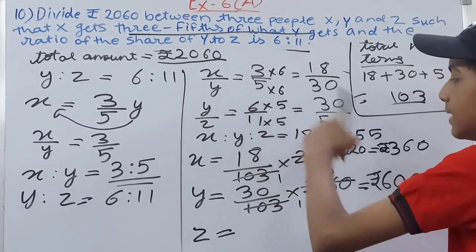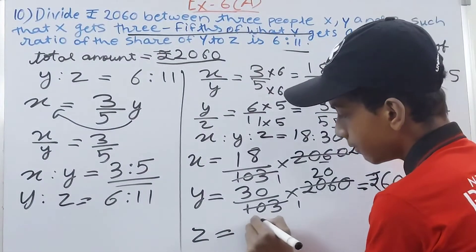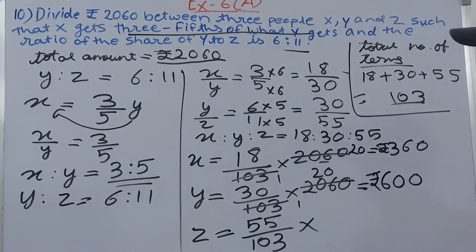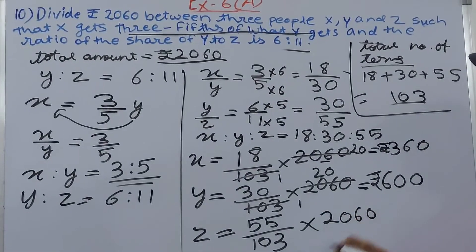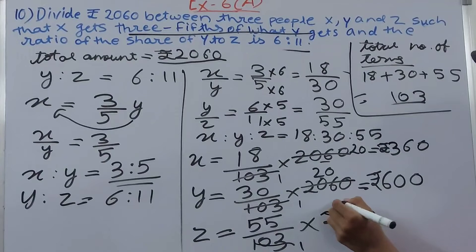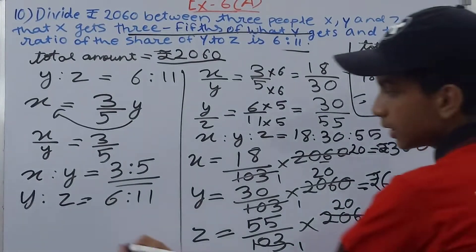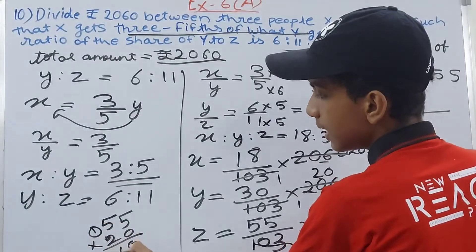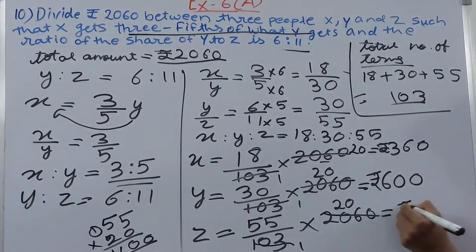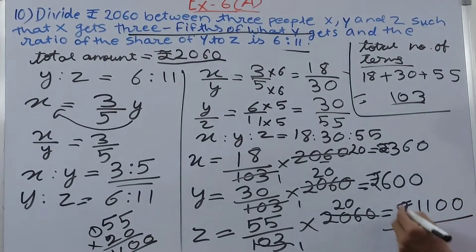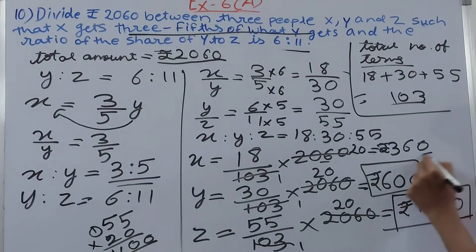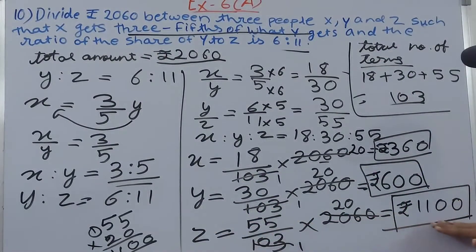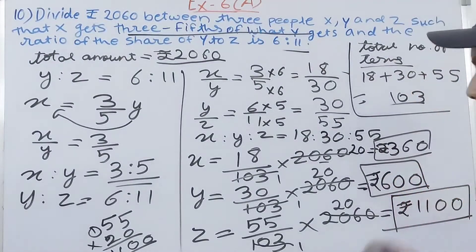The share of Z equals 55 upon 103 multiplied by 2060. Again 2060 divided by 103 is 20, so 55 multiplied by 20 equals 1100. Z gets rupees 1100. So our answer is: X gets rupees 360, Y gets rupees 600, and Z gets rupees 1100.